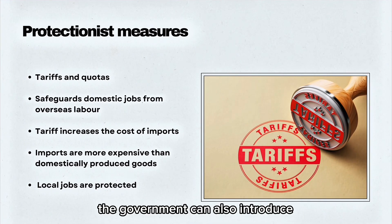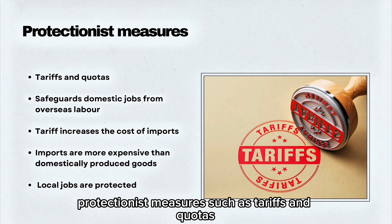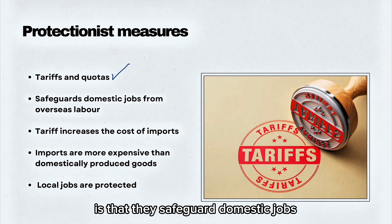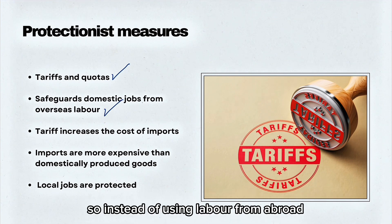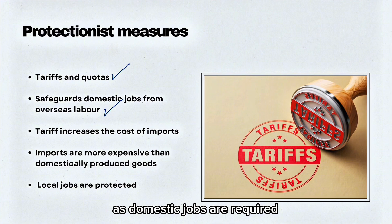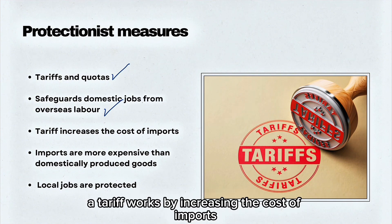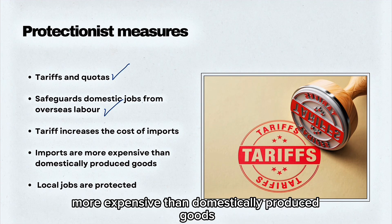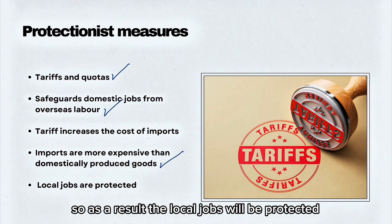The government can also introduce protectionist measures such as tariffs and quotas to safeguard domestic jobs from overseas labour. Instead of using labour from abroad, it is better to produce domestically. A tariff works by increasing the cost of imports from overseas, making imports more expensive than domestically produced goods, so local jobs are protected.